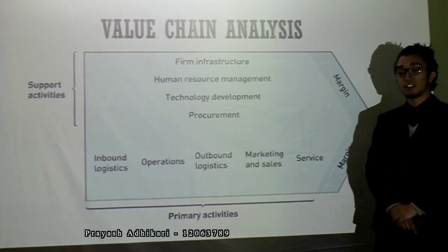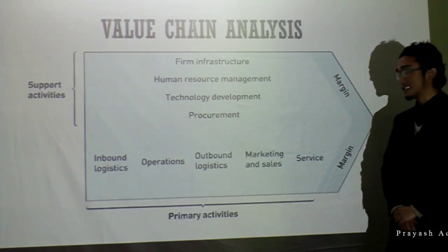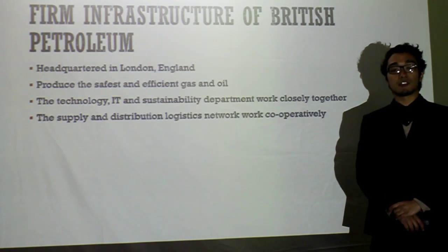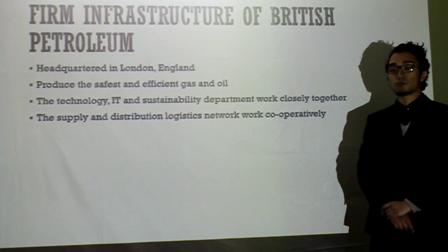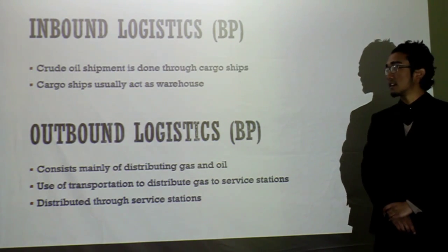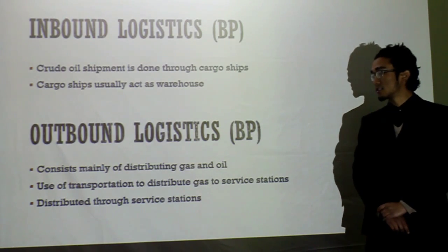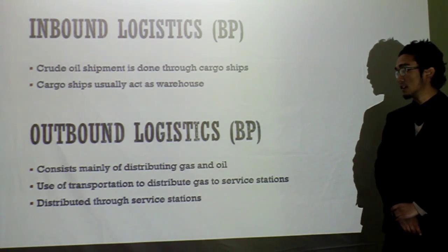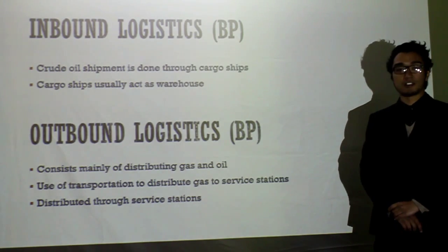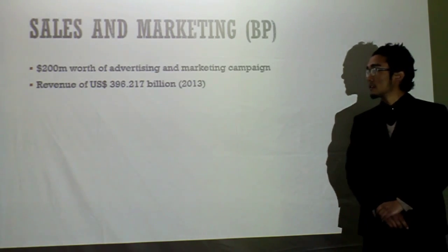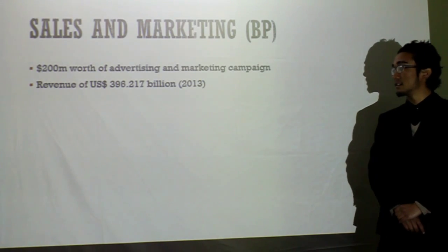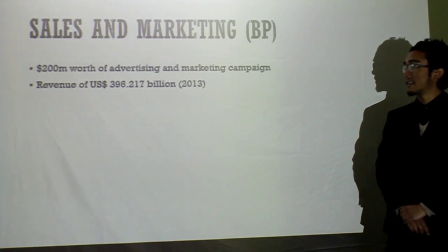The value chain analysis found that firm infrastructure, inbound logistics, outbound logistics, marketing and sales, and services were the main factors. For British Petroleum's firm infrastructure, it is currently headquartered in London and produces some of the safest and most efficient gas and oil. Inbound logistics: crude oil shipment is done through cargo ships, which sometimes act as warehouses. Outbound logistics consists mainly of distributing gas and oil, using transportation to deliver gas to service stations. Marketing: the company has a $200 million advertising and marketing campaign and its revenue in 2013 was $396 billion US dollars.